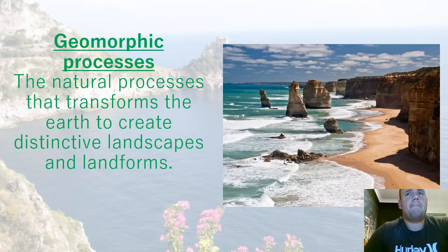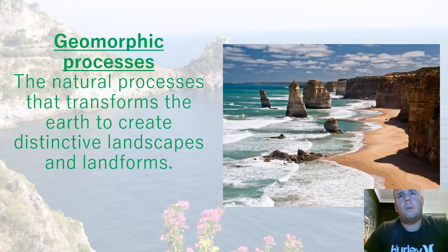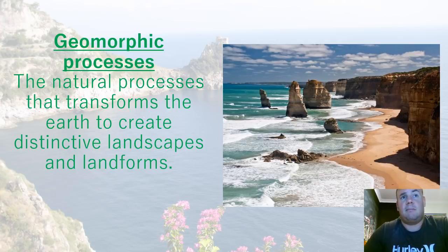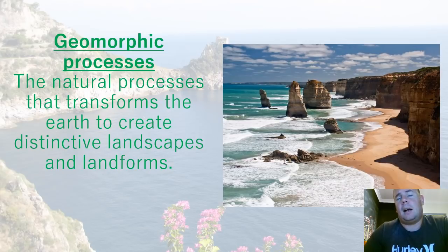When we have a movement of landforms, it's caused by geomorphic processes. This is where natural processes transform the earth to create distinctive landscapes and landforms. That picture you can see is the 12 Apostles from Victoria. The reason why it looks like that is because of geomorphic processes.